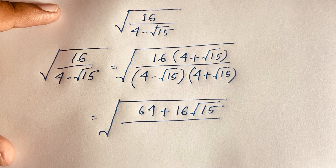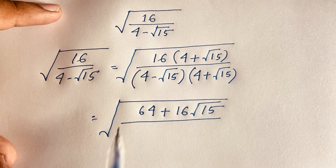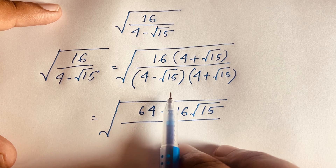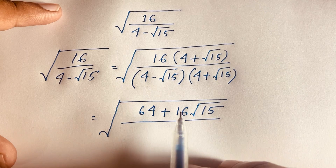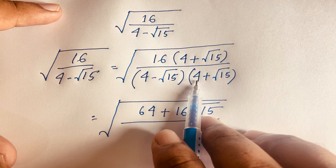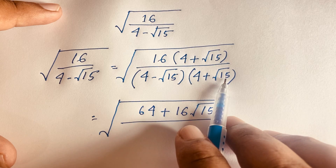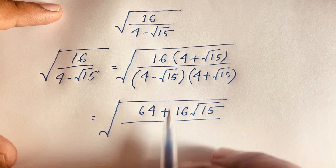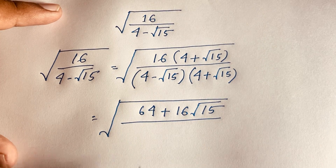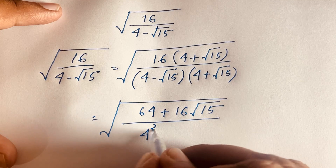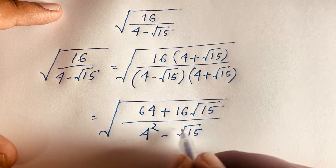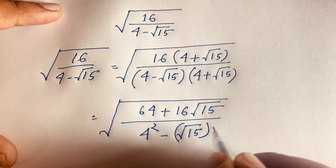In the denominator we recognize the identity (a + b)(a - b) = a² - b². If a = 4 and b = square root 15, then (a + b)(a - b) equals a squared minus b squared.